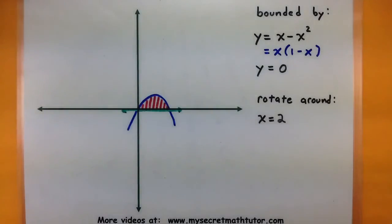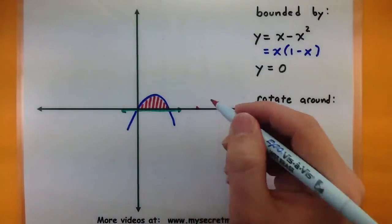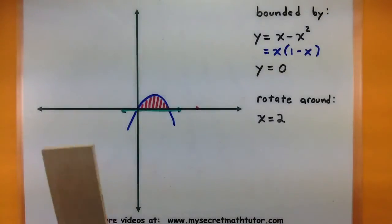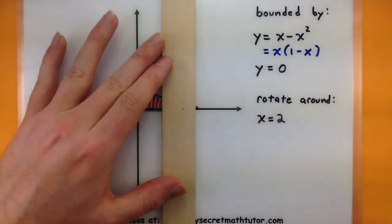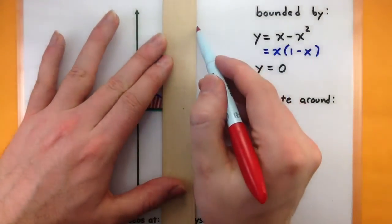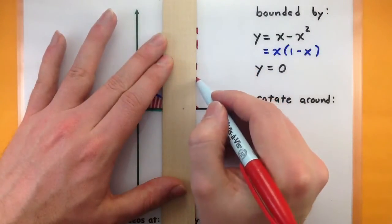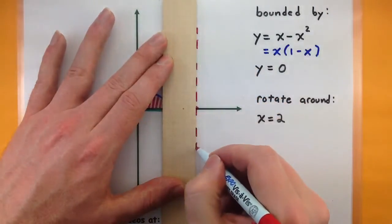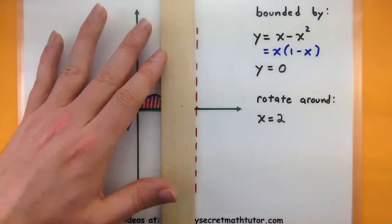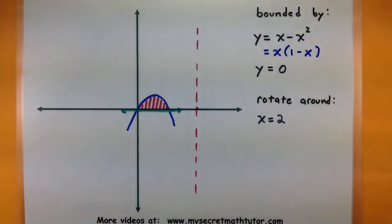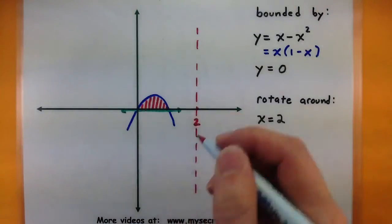Now we're going to rotate this about the line x equals 2. So if this guy's 1, 2 is probably right about there.